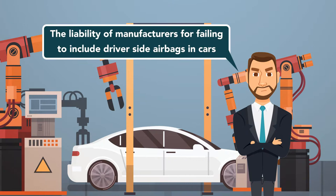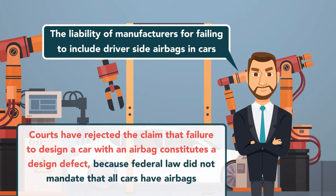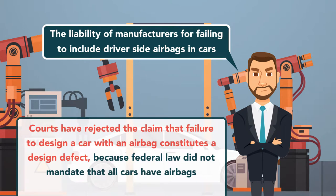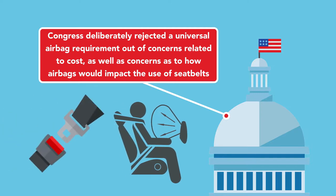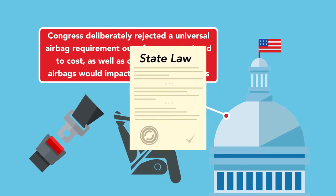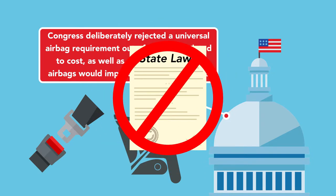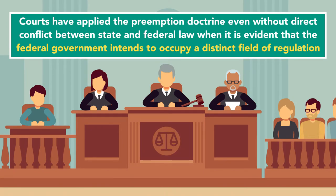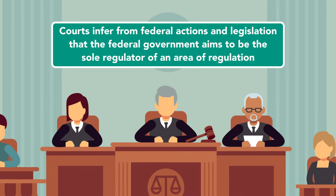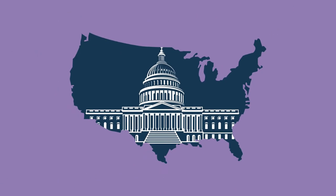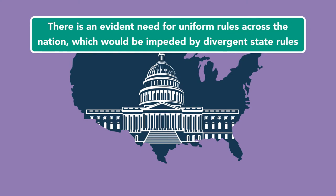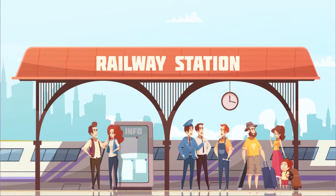One such area concerns the liability of manufacturers for failing to include driver-side airbags in cars. Courts have rejected the claim that failure to design a car with an airbag constitutes a design defect because federal law did not mandate that all cars have airbags. The rationale was that Congress deliberately rejected a universal airbag requirement out of concerns related to cost, as well as concerns as to how airbags would impact the use of seat belts. Therefore, a state law that required airbags would conflict with the terms and the goals of the federal statute. Courts have applied the preemption doctrine even without direct conflict between state and federal law when it is evident that the federal government intends to occupy a distinct field of regulation. A strong indicator of preemption based on occupation of an entire field is where there is an evident need for uniform rules across the nation, which would be impeded by divergent state rules. One such area is the regulation of railroad locomotives.